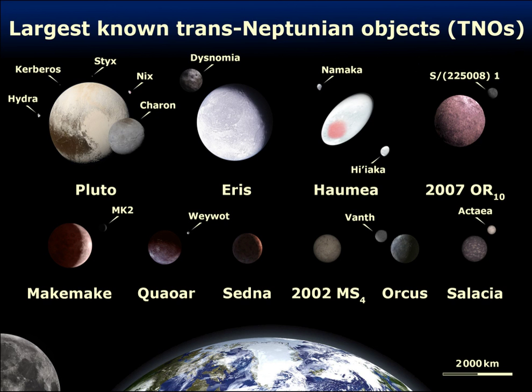After an asteroid's orbit is calculated with sufficient precision, it can be assigned a number — in this case, 29075-1950 DA. The asteroid 69230 Hermes was found in 2003 and numbered, but was found to be a discovery from 1937 which had even been named but subsequently lost. Consequently, its old name 'Hermes' has been applied to it.